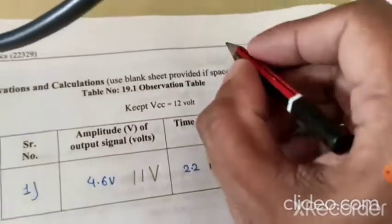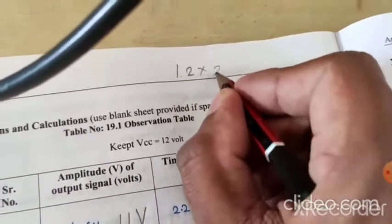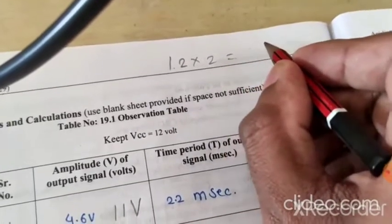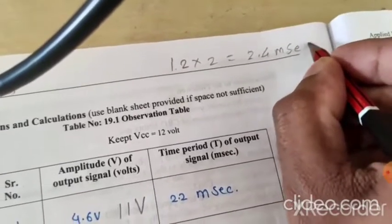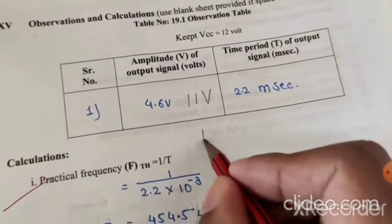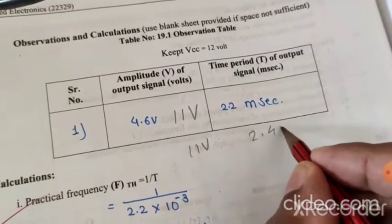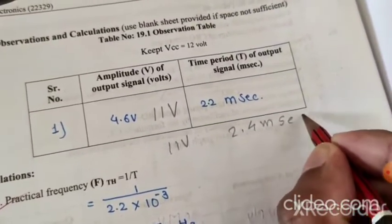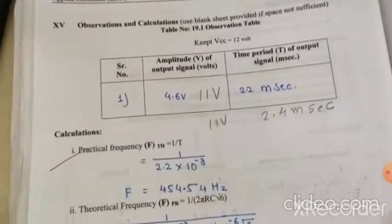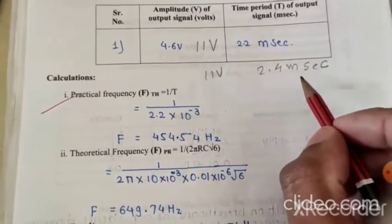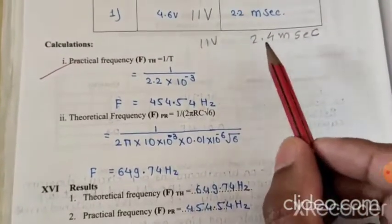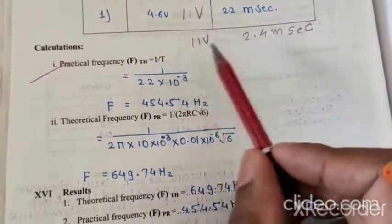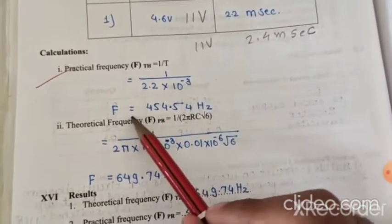The time period is 2.4 milliseconds. Using this time period, we can easily calculate the frequency. The formula is: time period equals 1 upon frequency. So frequency equals 1 upon 2.4 milliseconds, which gives 416.67 hertz.